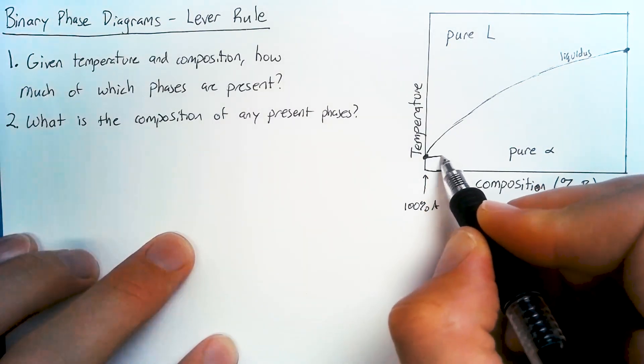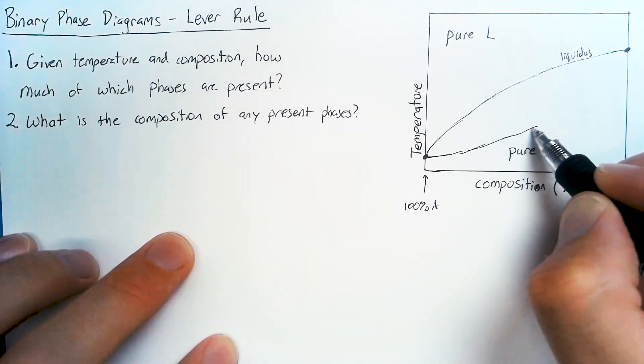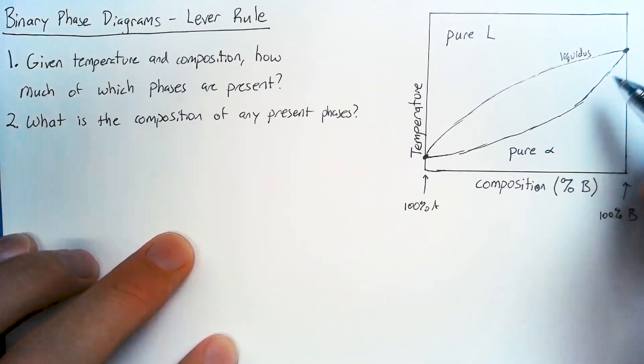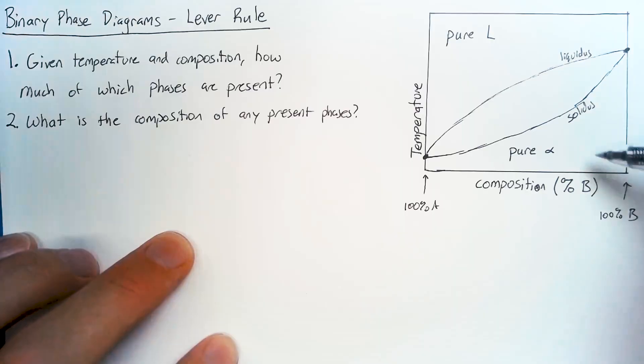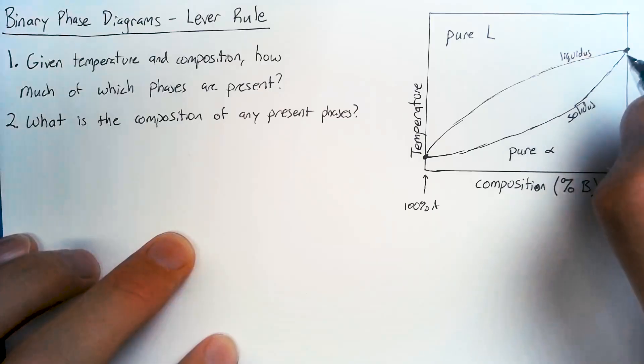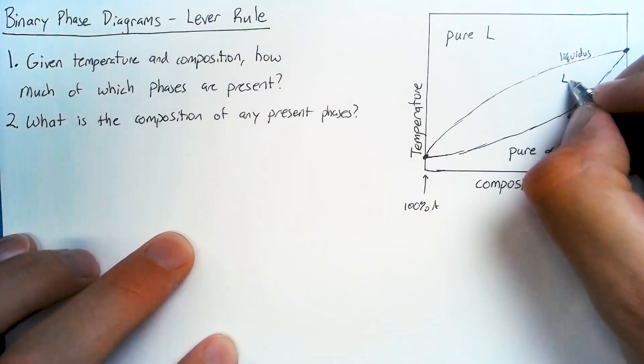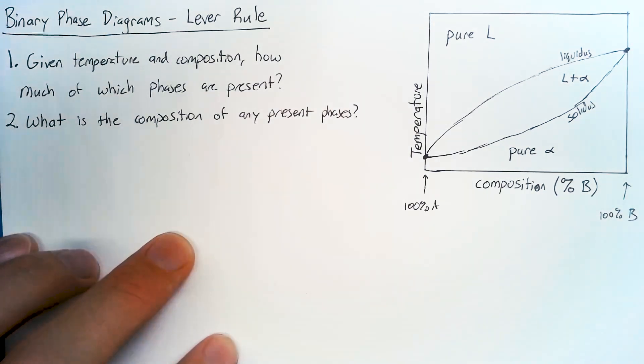Now the solidus line is actually not the exact same as the liquidus line. And below the solidus line, we are a pure solid. But in between these two lines, we actually have a mixture of phases. So we're going to have both liquid and alpha phase in between there.